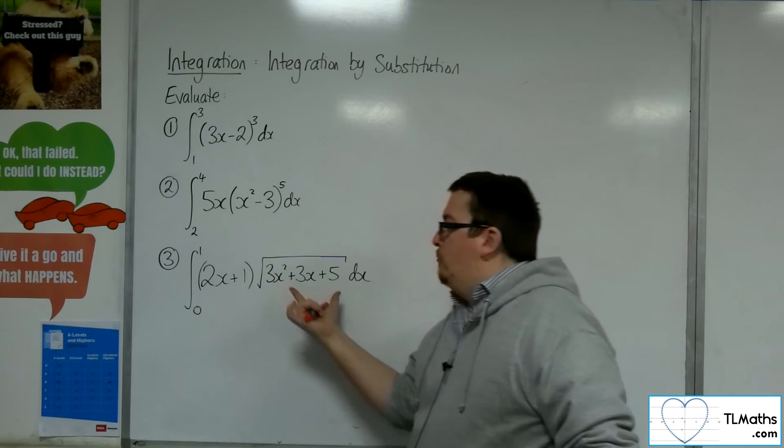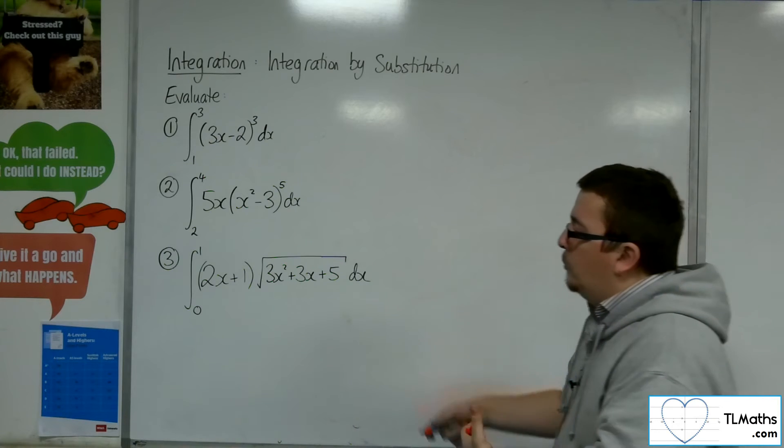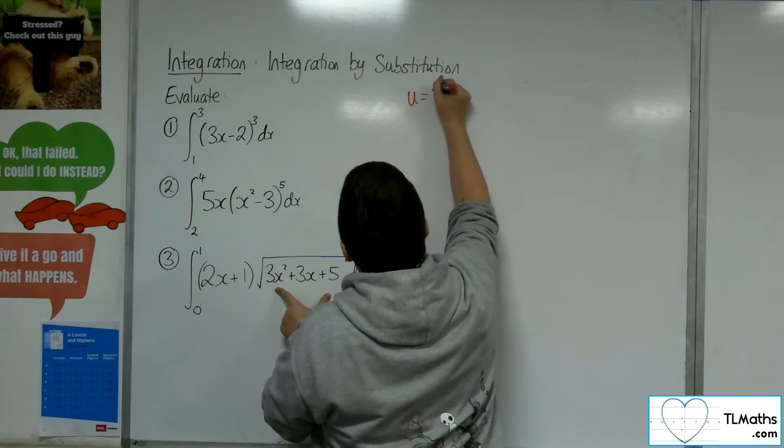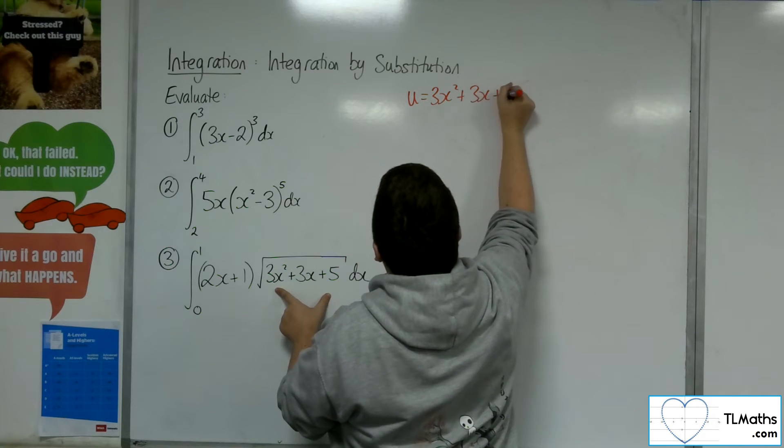Now this is the expression within the function of the square root, so that should be the u. So u equals 3x squared plus 3x plus 5.